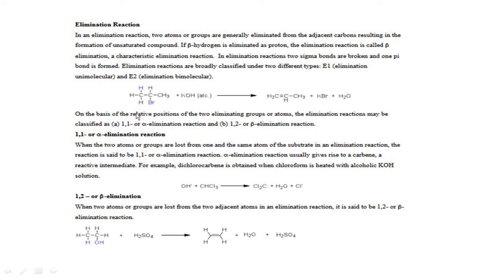Let's take the example of beta elimination or 1-2 elimination. In two adjacent carbons, a pi bond is formed and hydrogen and Br are removed. Hydrogen leaves as H⁺ and Br leaves as Br⁻. There is formation of CH₂=CH-CH₃. If this reaction takes place in the presence of a base — we take potassium hydroxide — OH and H combine to form water, and Br and K combine to form KBr. There is formation of a double bond between C and C, giving the product of the elimination reaction.